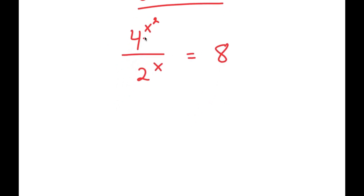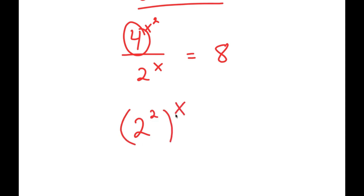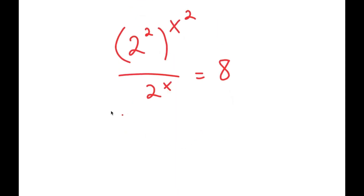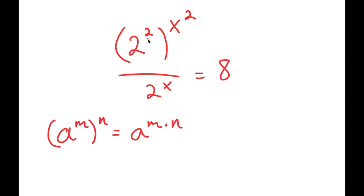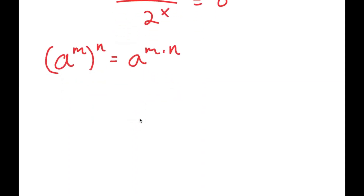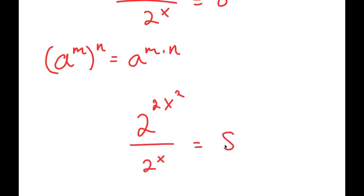What I'm first going to do is rewrite 4 as 2 squared, so I have 2 squared to the power of x squared over 2 to the power of x is equal to 8. And if I have something in the form a to the power of m to the power of n, this is equal to a to the power of m times n. So 2 squared to the power of x squared becomes 2 to the power of 2 times x squared, over 2 to the power of x, is equal to 8.